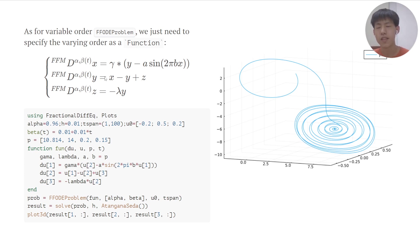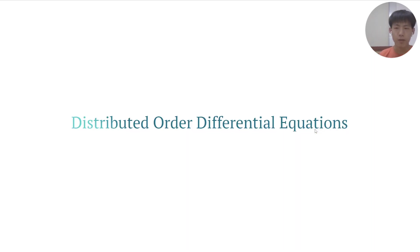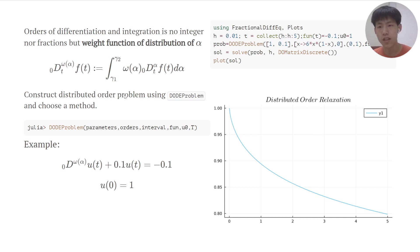This is for the time-varying kind — it's very easy: we define our problem and solve our problem. Next, we can see the distributed order differential equations. Here, the orders of differentiation and integration are neither integers nor fractions, but a weight function — a distribution of alpha.